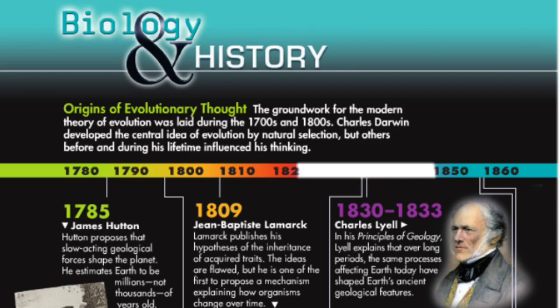Under what conditions does natural selection occur? Natural selection occurs in any situation in which more individuals are born than survive — the struggle for existence. There is natural heritable variation, and there is variable fitness among individuals — survival of the fittest.